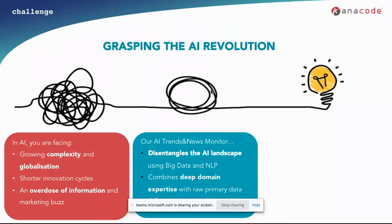So what do we get with this monitor? First, it disentangles and structures the AI landscape using a large quantity of text data and natural language processing applied to that text data. It also combines deep domain expertise — the team working on this product is very deep into AI and works with it on a daily basis. This expertise is integrated into the product and complements the big data approach. Finally, we use a continuous data stream, which means you can get information in real-time.